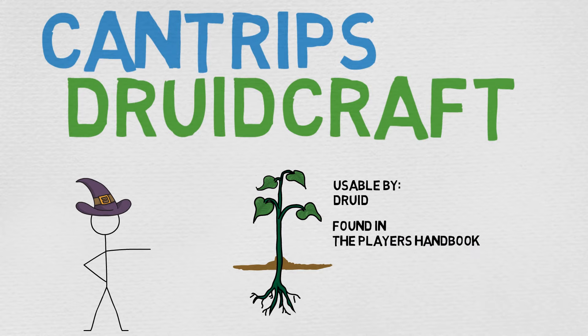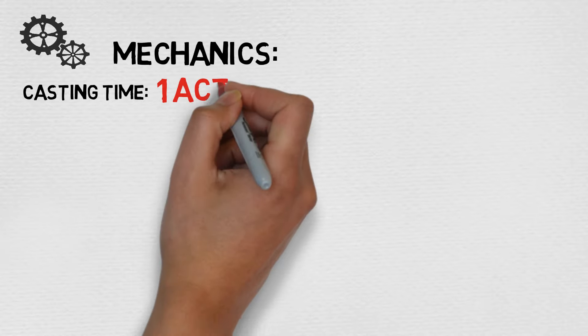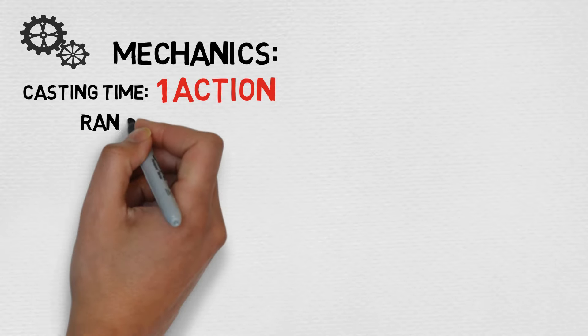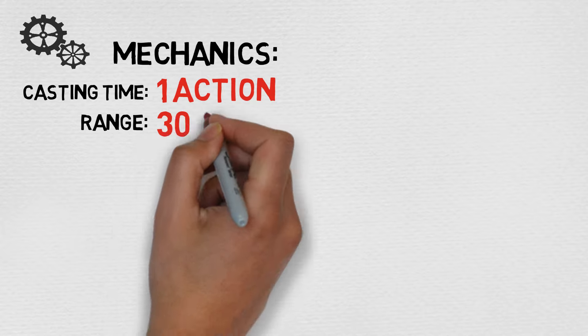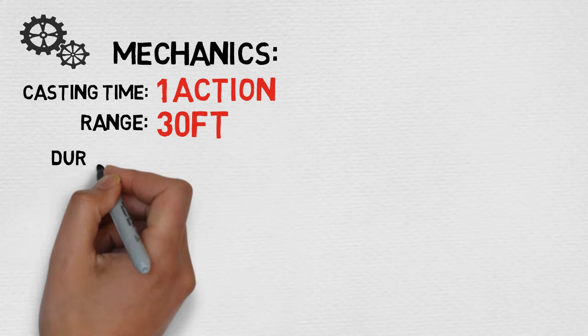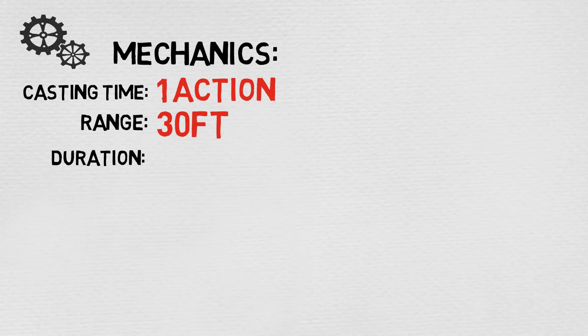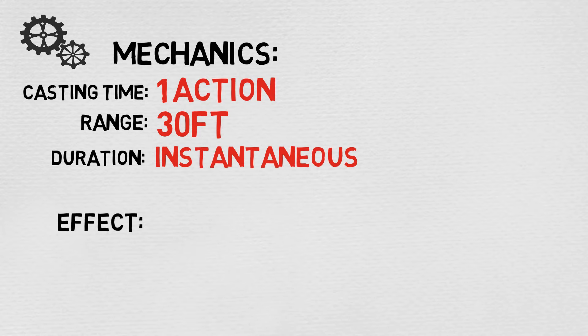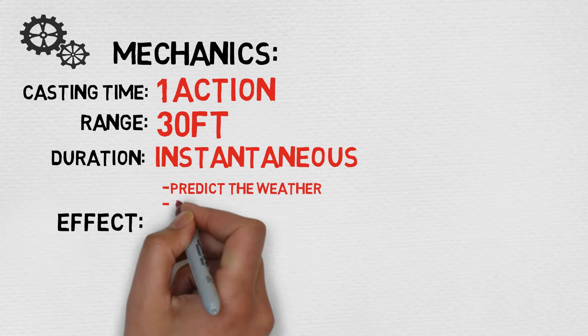Now let's take a quick look at some mechanics here. Cast time: one action. Range is a measly 30 feet. The duration is instantaneous, and the effect is essentially one of four. Just breaking it down point form here: first, predict the weather; second, cause plant growth; third, make a harmless sensory effect so long as it fits within a five-foot cube; and fourth, extinguish a small flame.